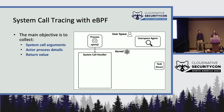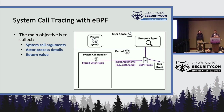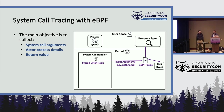eBPF allows you to attach eBPF code or an eBPF probe to various trace points or hook points inside the kernel. For syscall tracing, one such hook point is the syscall enter trace point, which triggers as soon as the kernel starts processing the system call. When an eBPF probe is attached to this trace point, the kernel passes all input arguments of the system call to the eBPF probe. The probe can also get details of the actor process from the task structure — an internal kernel structure — and then send those to user space for further processing.